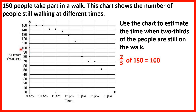We find 100 on the number-of-walkers axis and draw a line across the chart. There's no exact data point at 100, but we can estimate where a dot would fall between the surrounding points. Drawing a line down to the time axis, we can see it falls between 12 o'clock and 1 o'clock, closer to 1 o'clock. I would estimate the time is 12:45, so an answer between 12:40 and 12:50 would be acceptable.